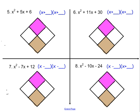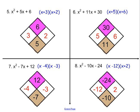Okay, so hopefully you paused the video, looked at these problems, and came up with the final solutions. x squared plus 5x plus 6 factors into x plus 3 times x plus 2. Number 6 factors into x plus 5 times x plus 6. Number 7 factors into x minus 4 times x minus 3. And number 8 factors into x minus 12 times x plus 2.